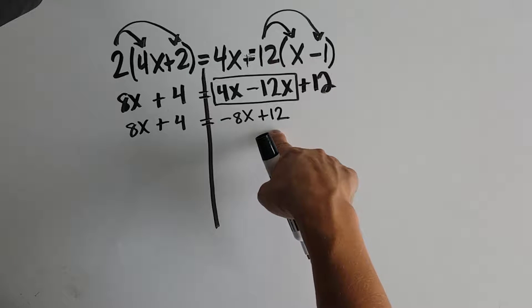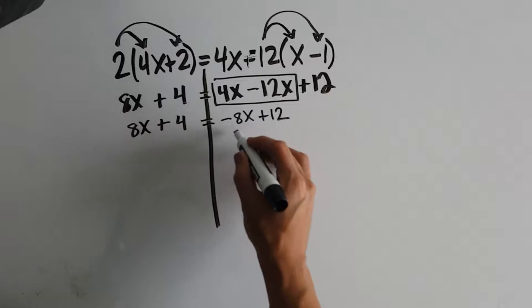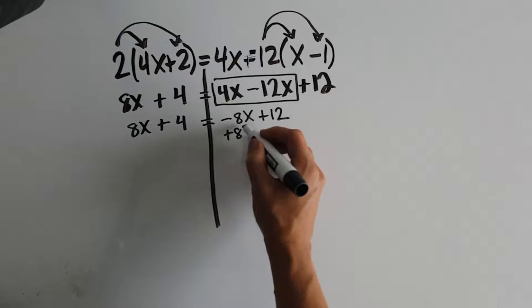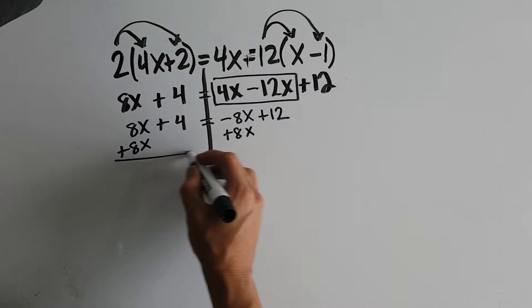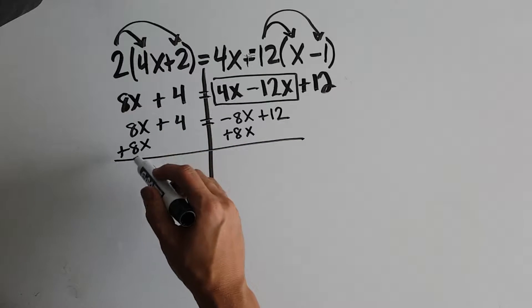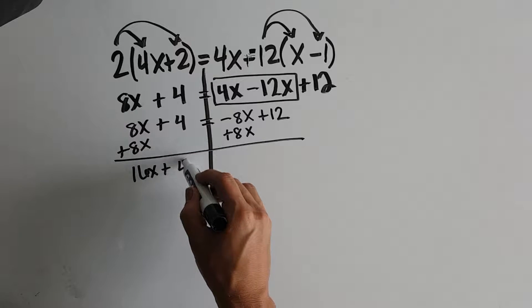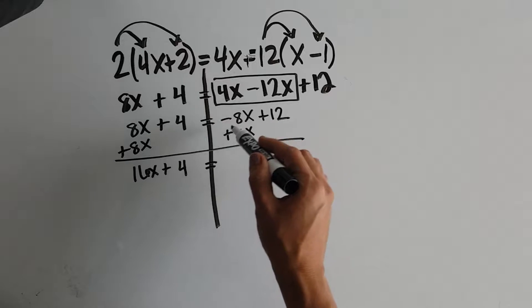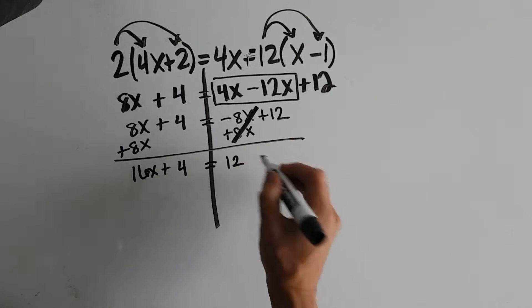Step 2 says get all of your variable terms on the same side. Well, I'm just going to put them on the left. So I see a negative 8x. So I need to add positive 8x. On the left side, 8x plus 8x is 16x. 4 plus 0 is 4. On the right side, negative 8x plus 8x is 0 plus 12 is 12.